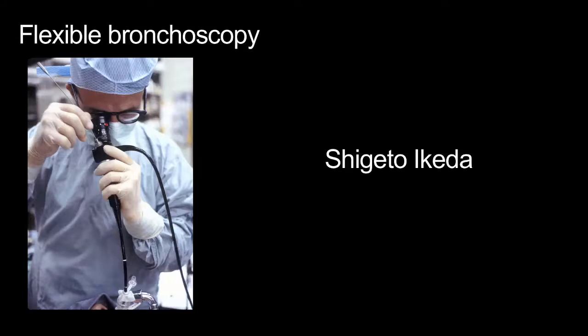The flexible scope was invented later in 1966 by the Japanese physician Shigeto Ikeda, who was the first to use fibre optic bundles connected to an external light source, and thus for the first time visualised lobar and segmental bronchi.